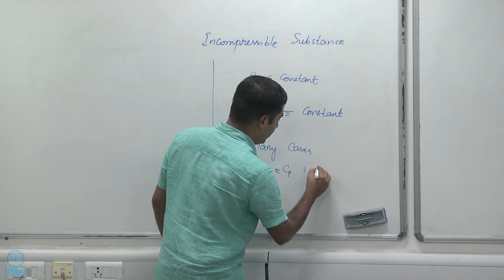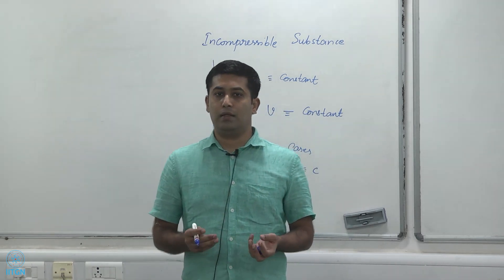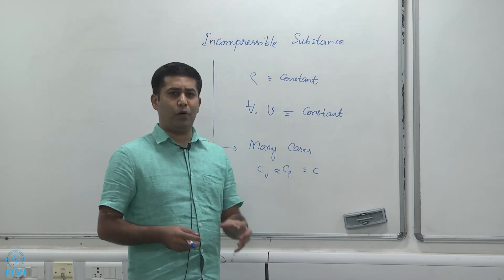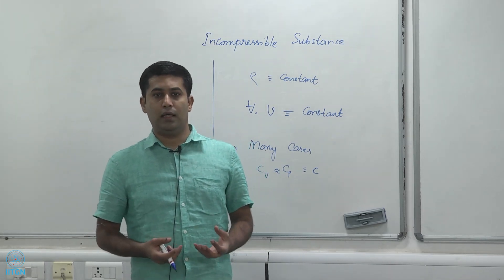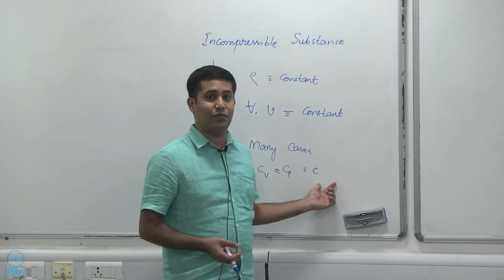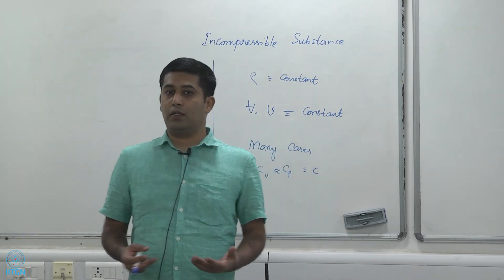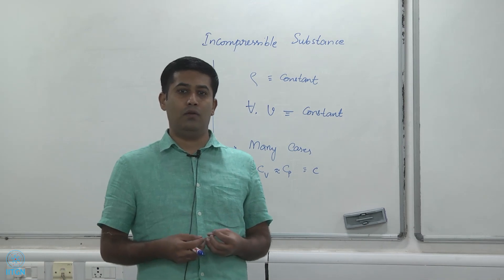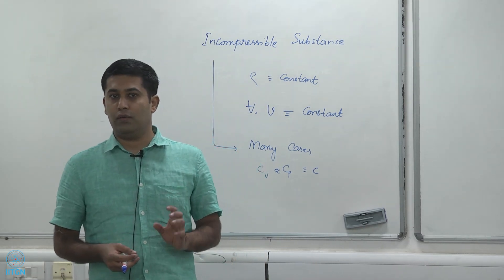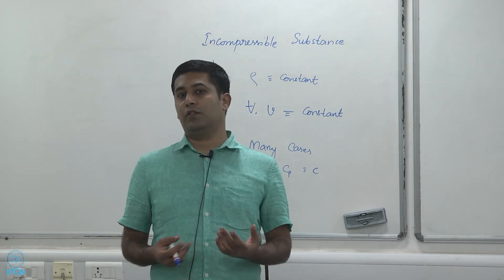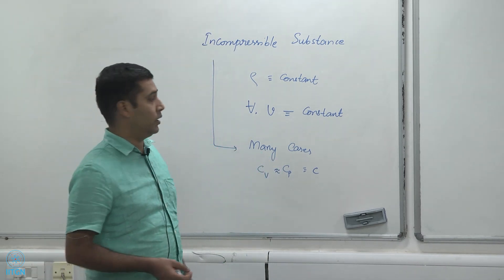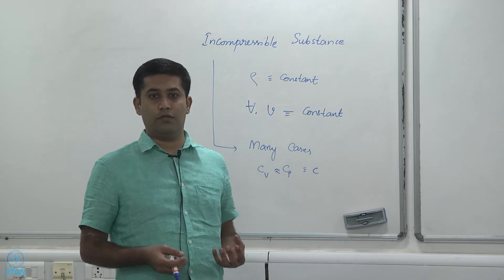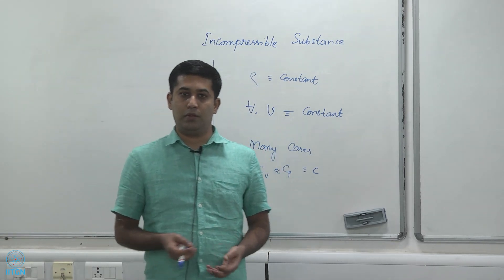We just call this specific heat C, without specifying whether it is specific heat at constant volume or at constant pressure, since both are approximately the same and for all engineering purposes can be assumed equal. For example, you may have heard that the specific heat of water is 4.2 kJ/kg·K — that means the Cp and Cv values of water are so close we just call it specific heat without further qualification.